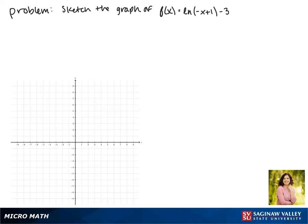Today we'll be graphing the function f of x equals the natural log of negative x plus 1 minus 3. We'll start by rewriting what's inside of our natural log because we want x to be by itself. This gives us f of x equals the natural log of the negative of x minus 1 minus 3.